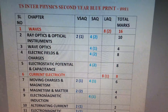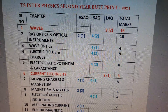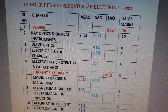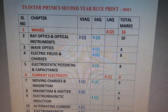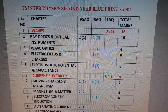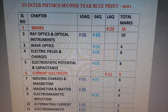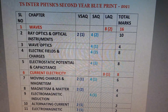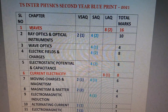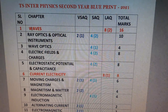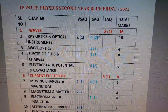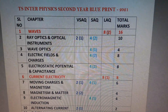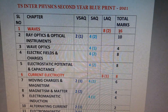In this video we can learn about the TS Intermediate Physics second year blueprint for the academic year 2020-21. We have 16 chapters in second year physics. In the first chapter, Waves, there will be two 8-mark questions, so the total weightage of this chapter will be 16 marks.